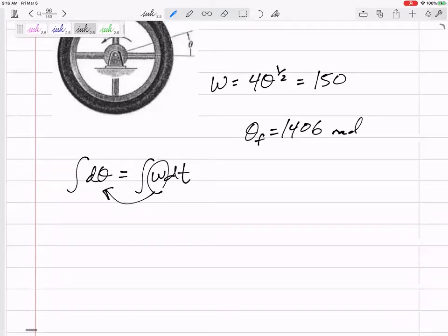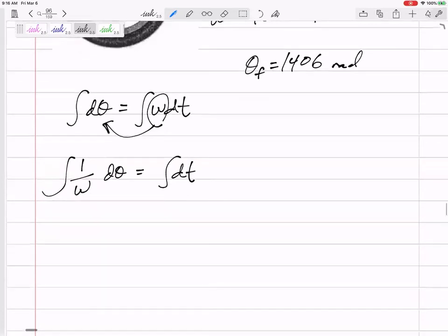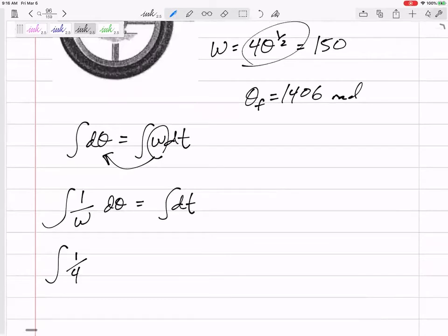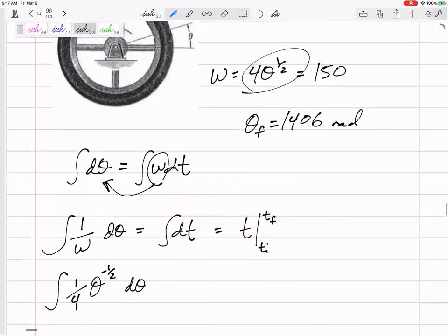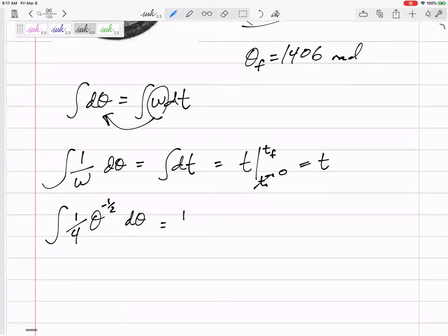So that was interesting. So let's do this. So integral of 1 over omega equals integral of dt. So the integral of 1 over 4 theta to the 1 half? I would call that 1 fourth theta to the negative 1 half. I think I could do that integral. And then this is going to be t. And technically, from t initial to t final. But, you know, we're always starting at a time of zero. The right-hand side of my equation is going to be t. The left-hand side of my equation is going to be what? I add 1 to the exponent and divide it by the new exponent.